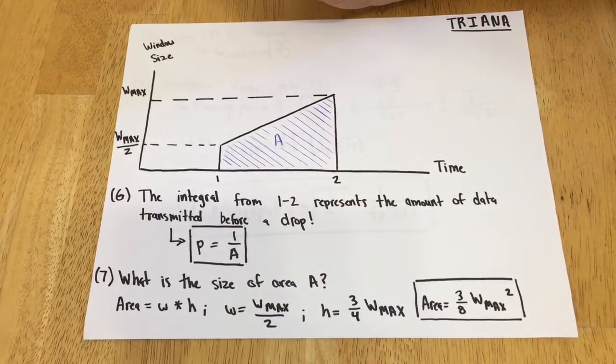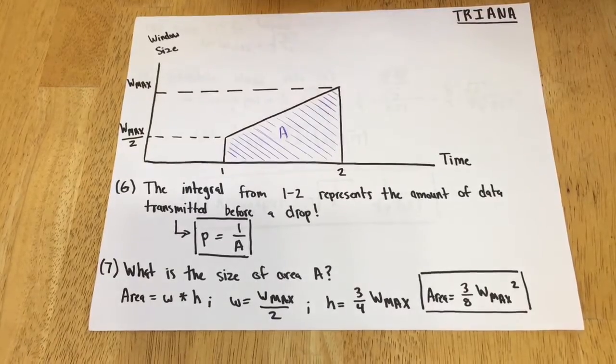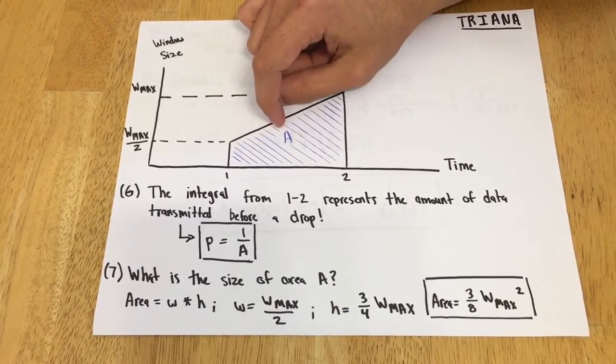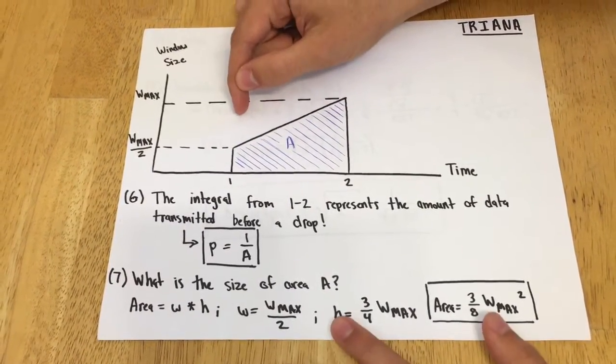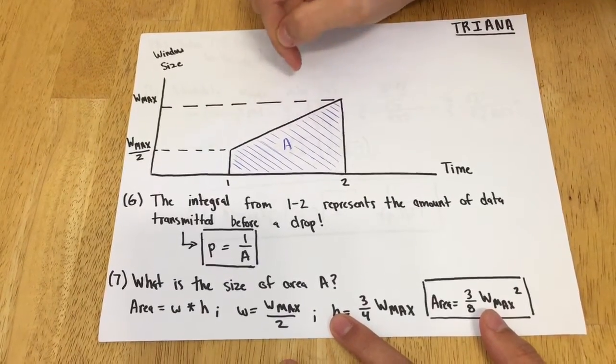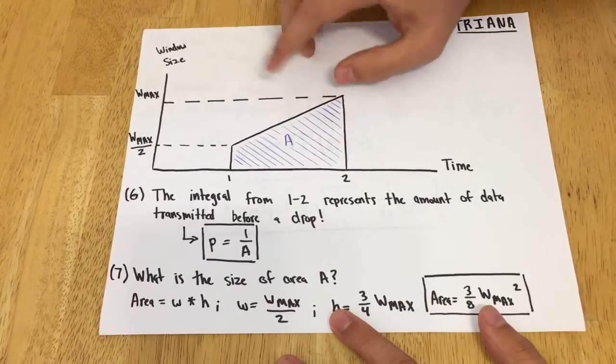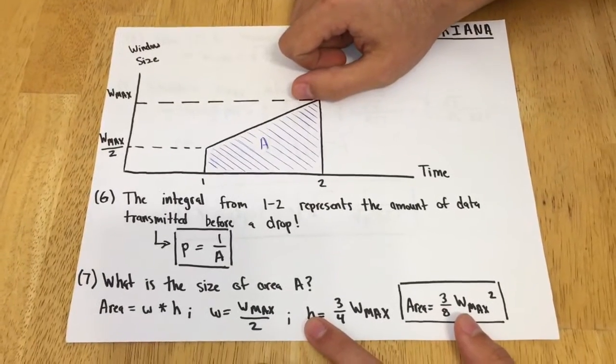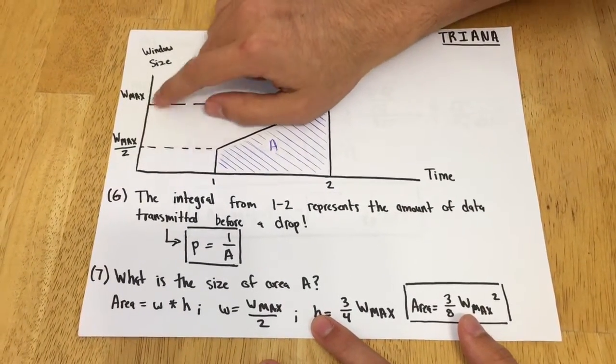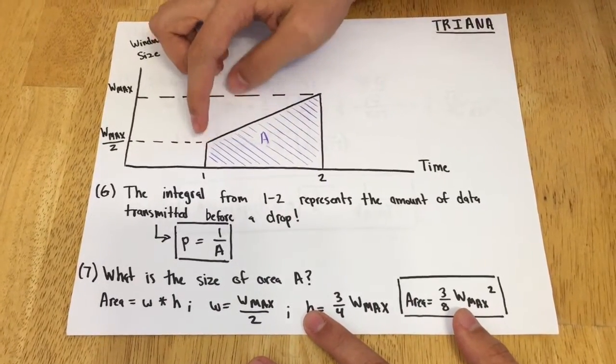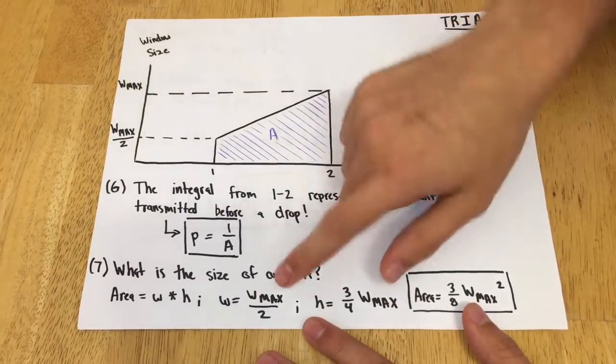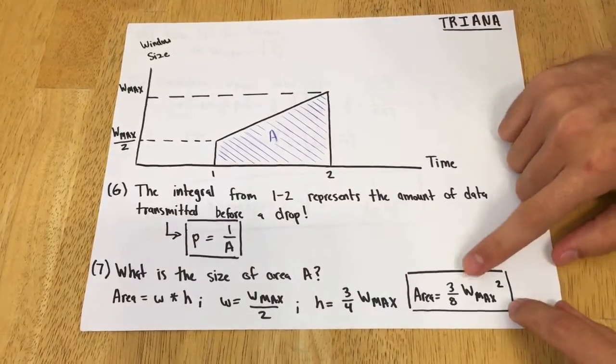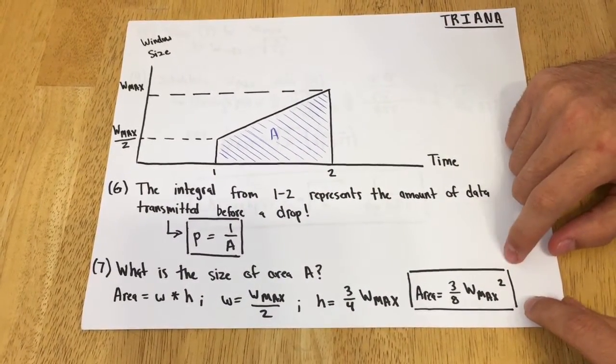The reason why this width from 1 to 2 is W_max over 2 is because this function grows with a slope of 1 over 1 RTT. For every horizontal step of RTT, the window size increases by 1 MSS. That means to increase by a height of W_max over 2, which is the distance between these two Y values, it's going to take W_max over 2 RTTs. If we multiply the width times the height, we get an area of 3/8 W_max squared.